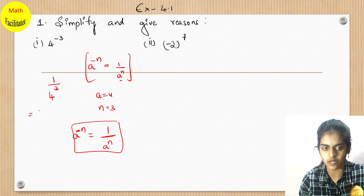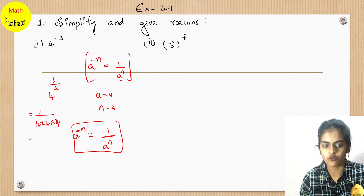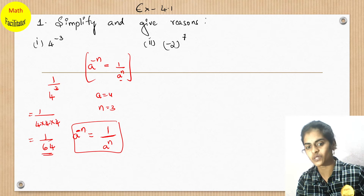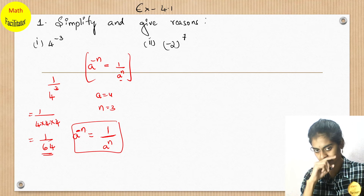4 cube is nothing but 4 into 4 into 4, which gives you 64. So 1 upon 64 is the answer for this.